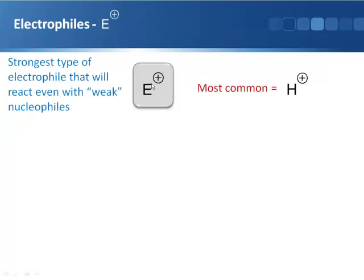We'll start with these positively charged electrophiles. E+ is a generic representation of these electrophiles — E can be anything bearing a positive charge that is going to react with a nucleophile. These tend to be the strongest type of electrophile and can even react with really weak nucleophiles. The most common electrophile of this type that we come across is the proton.